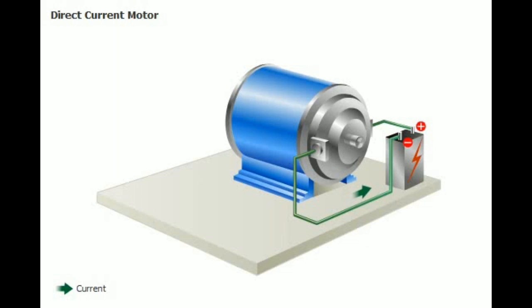An electric motor converts electrical energy into mechanical energy. A DC motor uses direct current electricity that flows continuously in only one direction around a circuit.